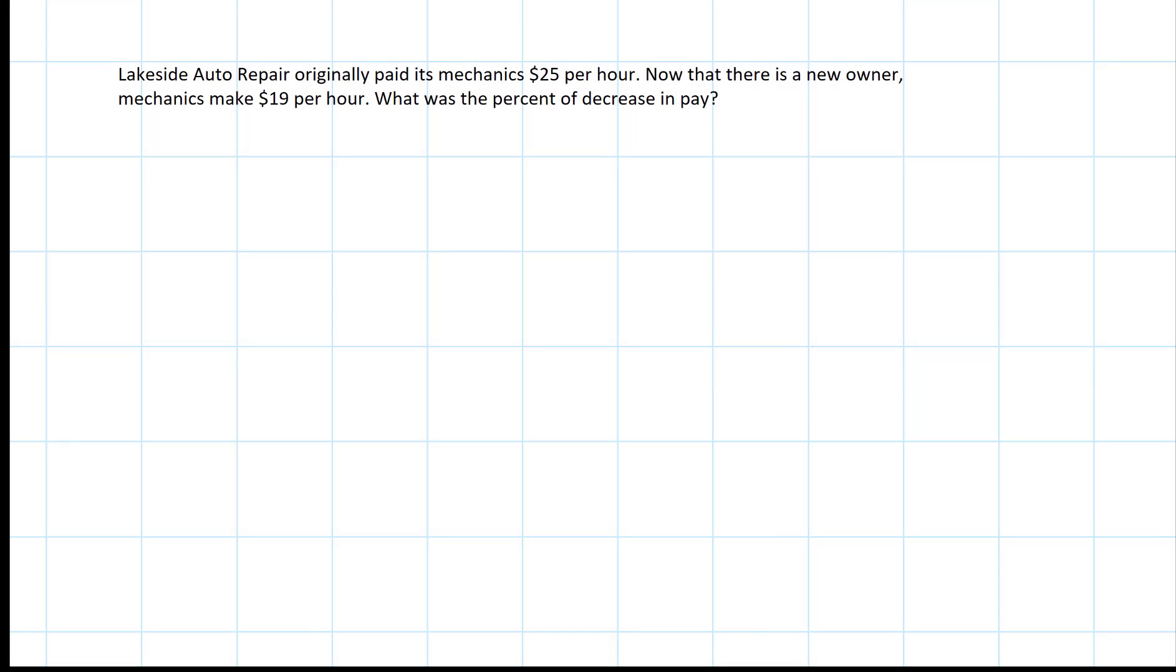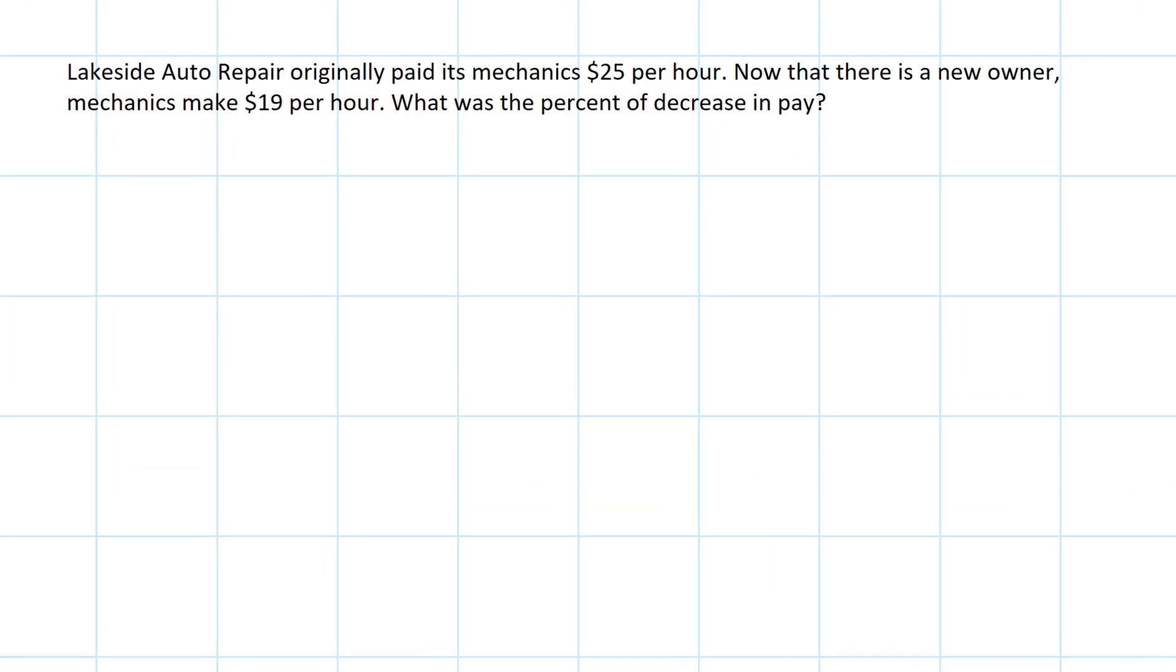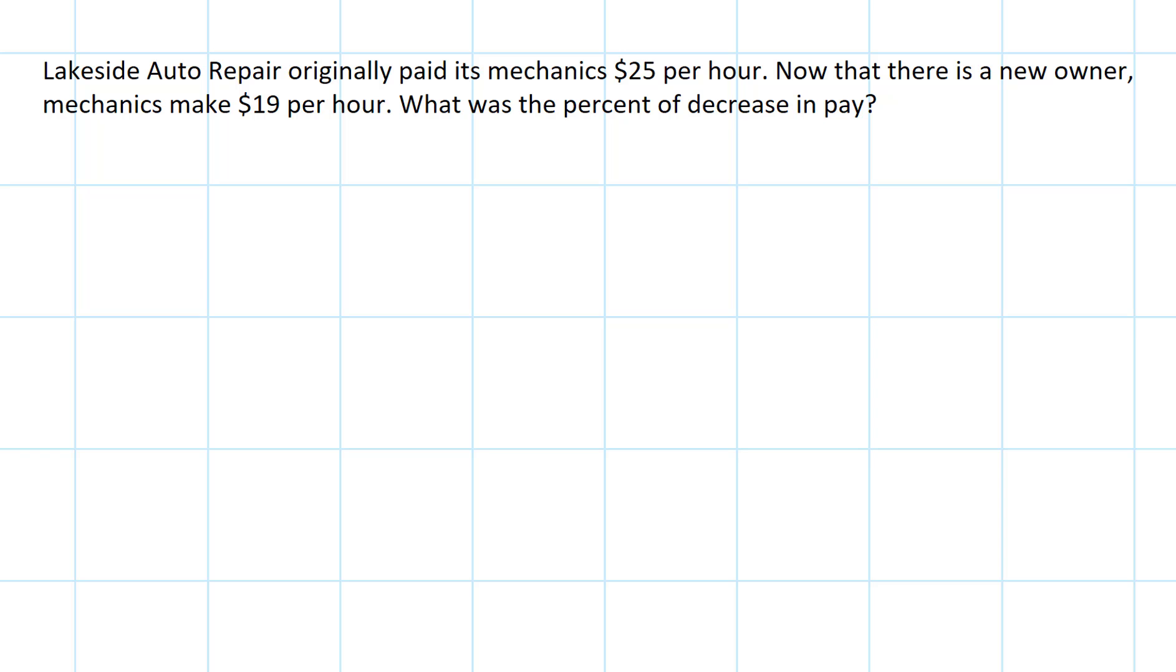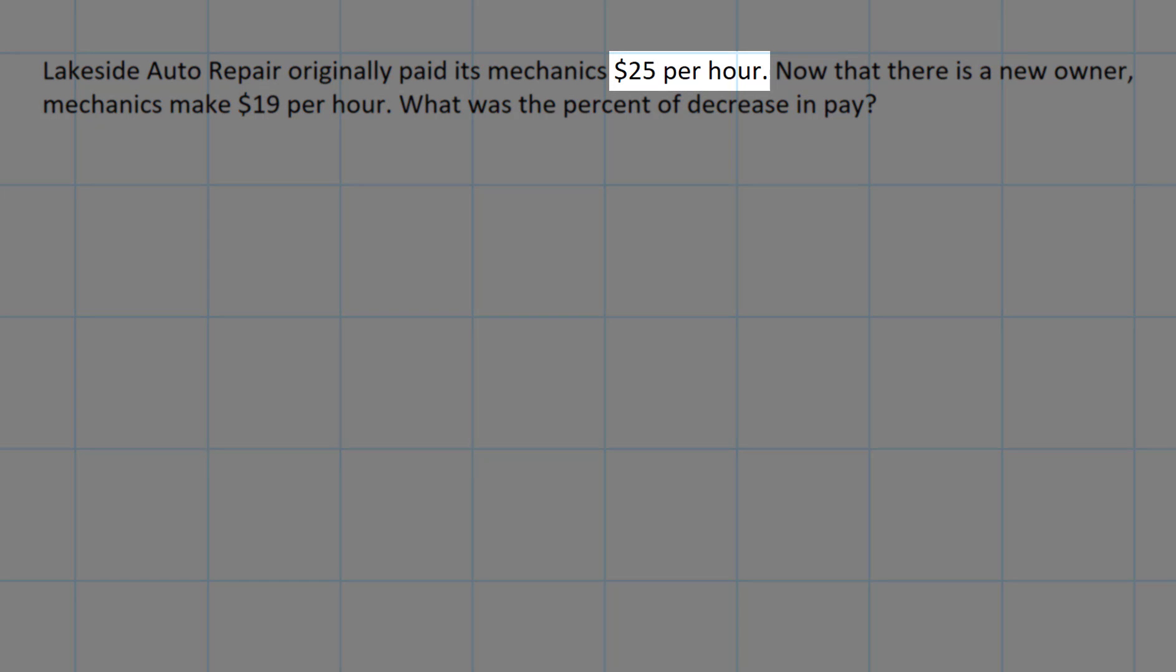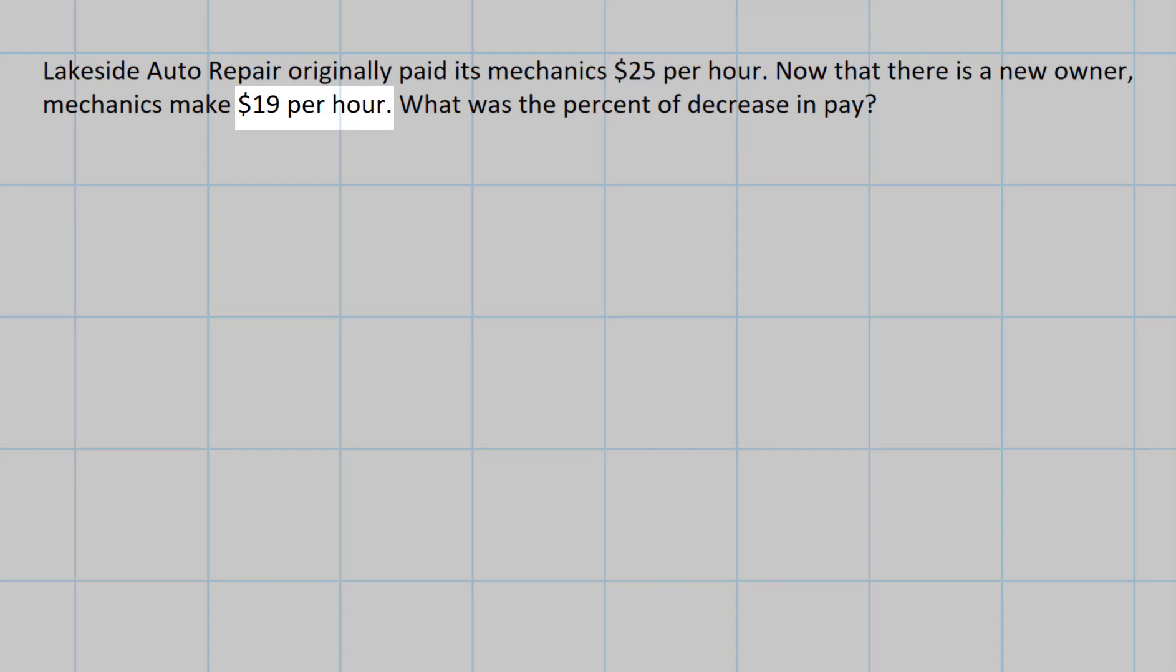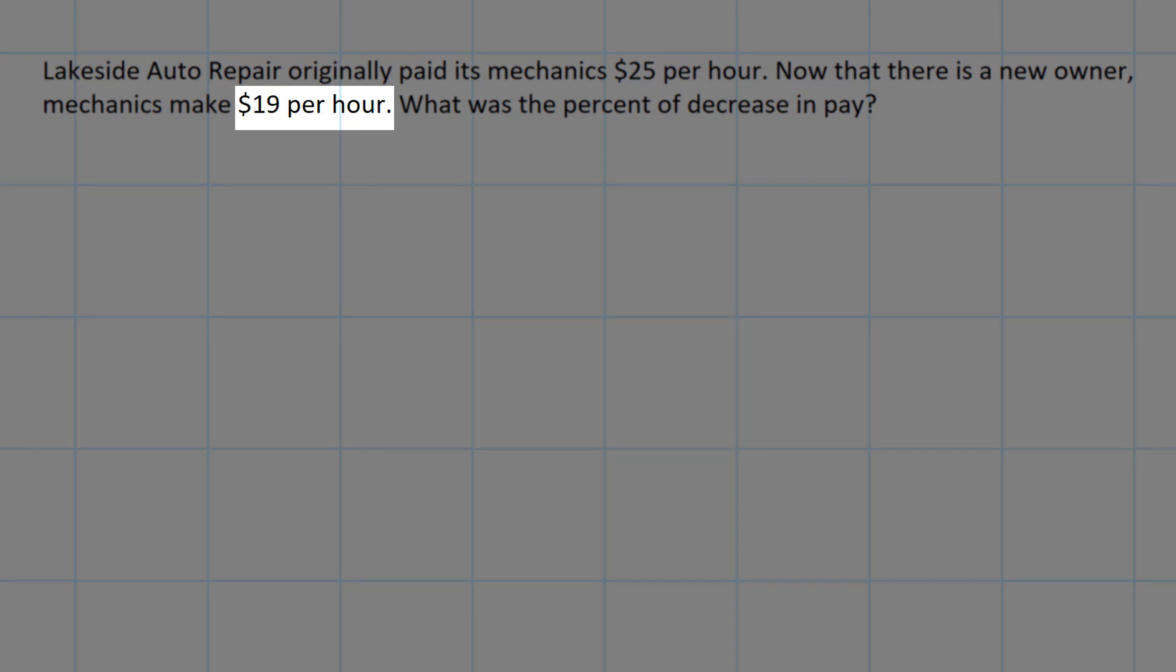So here's another question. And sometimes it's good to use our boxes to have a visual in front of us. But other times it might make it a little bit more difficult. Knowing what the 100% is in the word problem, that's the key. It says Lakeside Auto Repair originally paid its mechanics $25 per hour. Now that there's a new owner, the mechanics make $19 per hour. What was the percent of decrease in their pay?